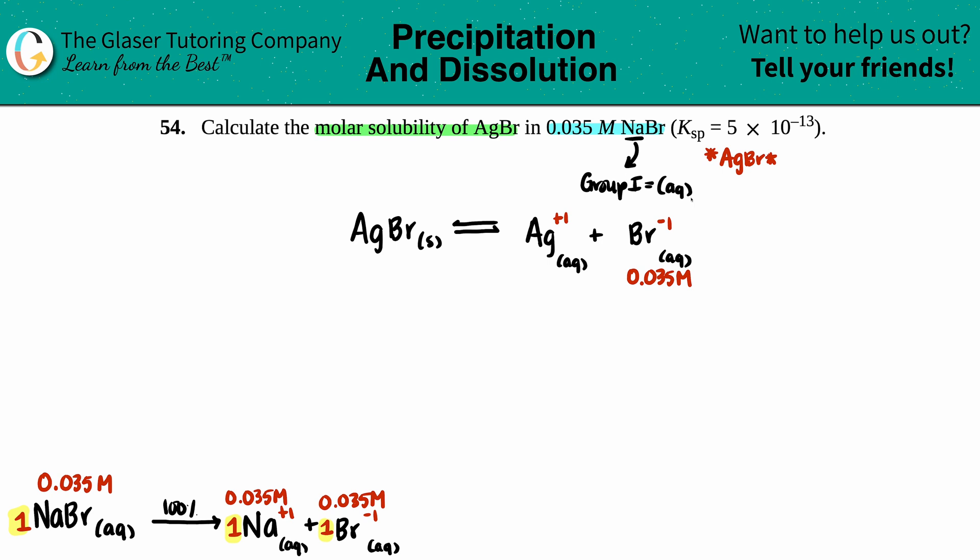But now, technically what we should do is, since we have initial amounts, I should do an ICE table, because if I try to assume here and I can't, well then the math is going to be a little bit messed up. So what I'm going to do is, for math purposes, remember solid nobody cares, so this goes bye-bye. And we didn't start off with any silver, so this is going to be a zero.